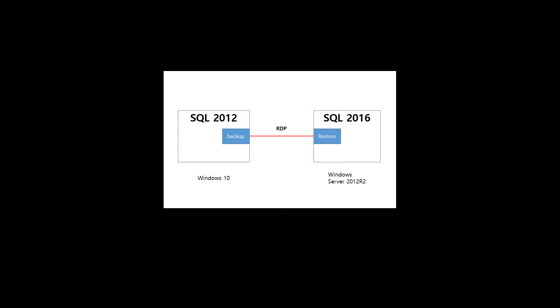The concept is shown in the picture. Currently a database server SQL 2012 is installed on my Windows 10 computer, and I'm gonna back up this database to the SQL 2016 on the right side of the picture. SQL 2016 is installed on Windows Server 2012 R2. I'm going to jump to both nodes via RDP session.